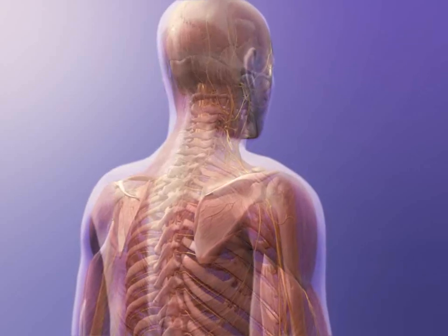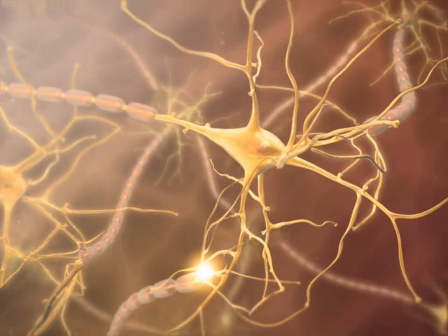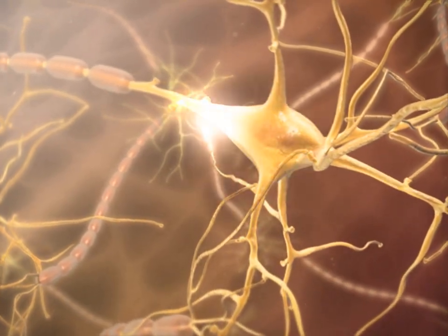Structures of the nervous system transfer messages throughout the body. Specialized nervous system cells called neurons make this messaging possible.